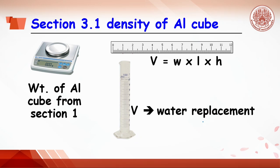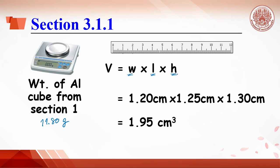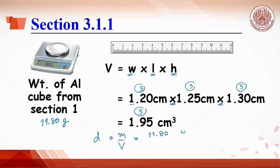For Section 3 density of aluminum cube, divide mass from Section 1 by volume. For example, mass is 11.80 grams (4 significant figures). When volume is measured with a ruler, each dimension has 3 significant figures; multiplying gives 3 significant figures for volume. Density equals mass divided by volume: 4 significant figures divided by 3 significant figures means the result should have only 3 significant figures.